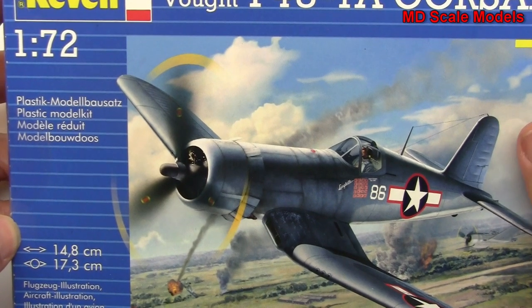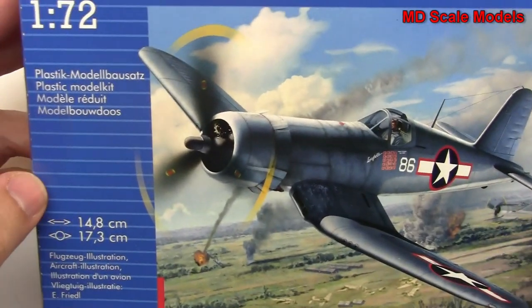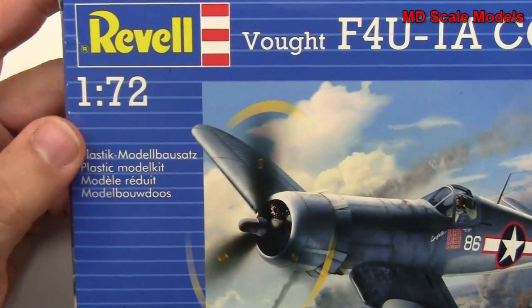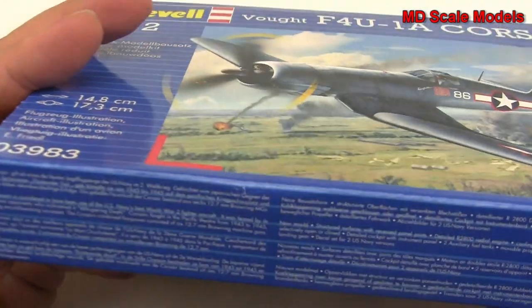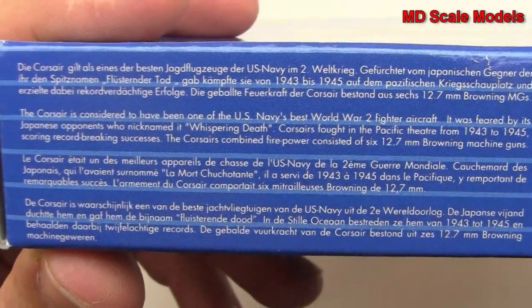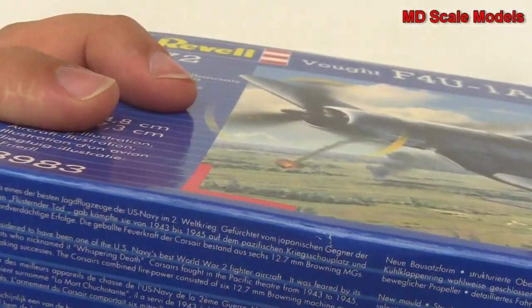Now this model kit review is of the Vought F4U Corsair, the WWII plane. It's a 1:72 scale model by Revell and there are the dimensions and some details there about the plane.